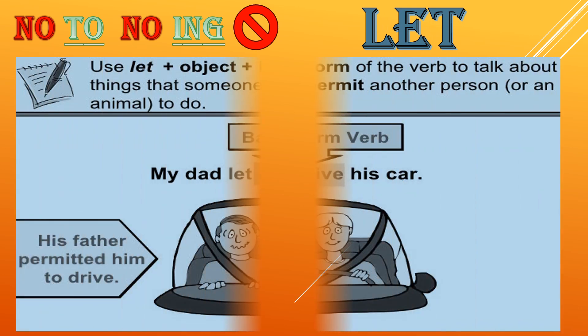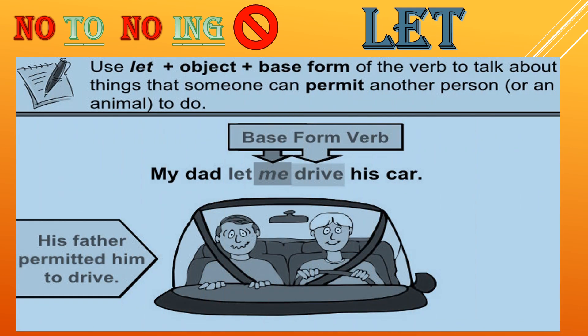No 'to', no -ing. حالا میخوایم بریم سراغ فعل‌هایی که نه 'to' می‌گیرن نه '-ing'. اولیش 'let'. شما در واقع 'let' رو استفاده می‌کنید توی جملات با مفهوم 'permit' — یعنی اجازه دادن. بعدش object میاد و بعدش فعل میاد. اون فعل به هیچ عنوان 'to' نمی‌گیره. مثلاً: my dad let me drive his car. نمی‌گید 'my dad let me to drive' — این کاملاً غلطه. پس اولین فعلی که نه 'to' می‌گیره فعل بعدش نه '-ing' فعل 'let' هستش.